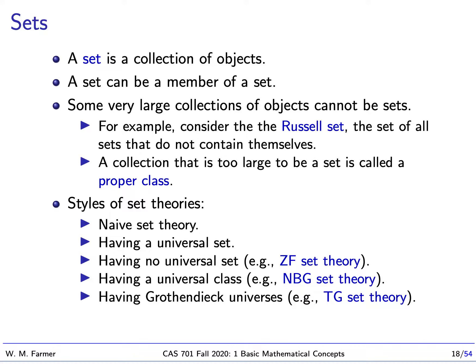There are different styles of set theory. The first is naive set theory, where we don't worry too much about exactly what sets are — the problem is we can write down something like the Russell set. We can have styles with a universal set, where all members are part of one big set. We can also be very formal with set theories that avoid paradoxes, the most famous being ZF set theory — Zermelo-Frankel set theory — which has no universal set.